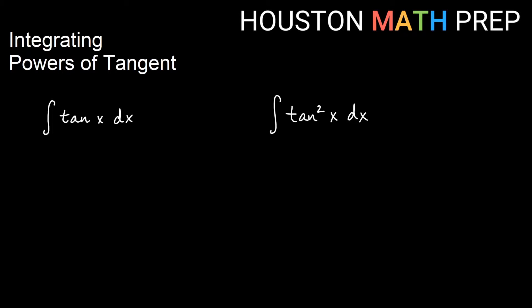The first one is just the integral of tangent itself. You may have already memorized this one, but one way we can think of this is simply as sine of x over cosine of x dx, and this can be a nice u substitution. I'll think of u being the bottom of the fraction, cosine x.